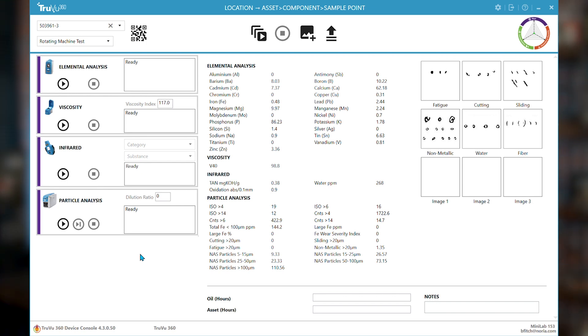All right, you'll notice here that not only does it give you the ISO 4406 particle count for four microns or greater, six microns or greater, 14 microns or greater. And that will, in this case, was a 19/16/12. That's coming from here.